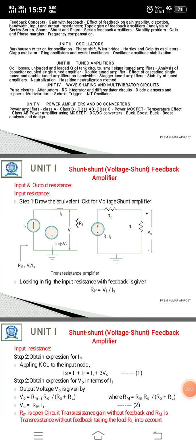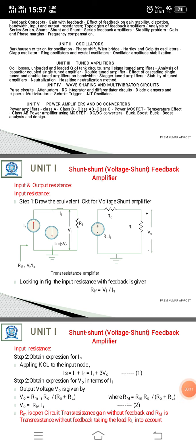Good morning. In this section we have discussed about the shunt feedback amplifier, the input and output resistance of the shunt feedback amplifier. In this section we will derive the expressions for input resistance and output resistance in voltage shunt feedback amplifier. Here we draw the equivalent circuit for the voltage shunt amplifier. The voltage shunt feedback topology is shown in the figure with the amplifier input circuit represented by Norton's equivalent circuit and the output circuit represented by Thevenin's equivalent.